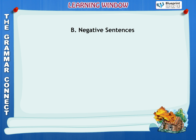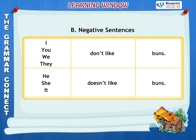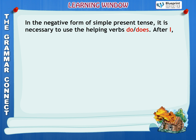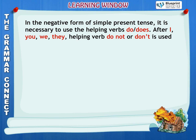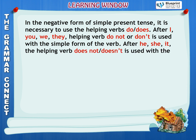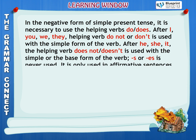B. Negative Sentences. I, You, We, They — Don't like Buns. He, She, It — Doesn't like Buns. In the negative form of Simple Present Tense, it is necessary to use the helping verbs DO or DOES. After I, You, We, They — the helping verb DO NOT or DON'T is used with the simple form of the verb. After He, She, It — the helping verb DOES NOT or DOESN'T is used with the simple or base form of the verb. S or ES is never used — it is only used in affirmative sentences.